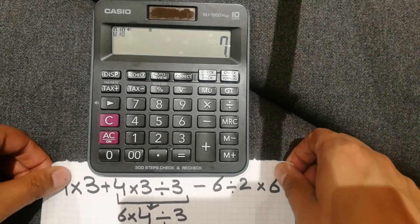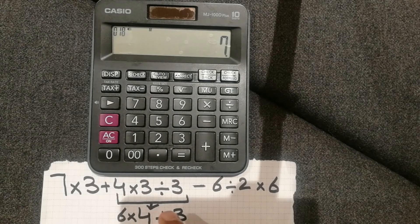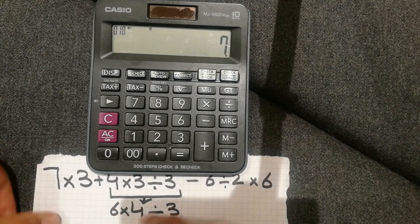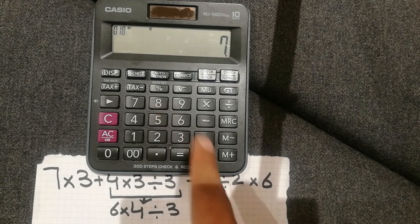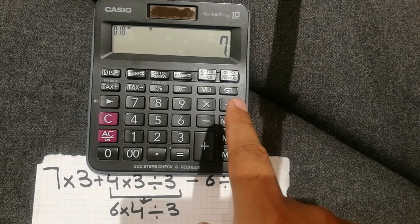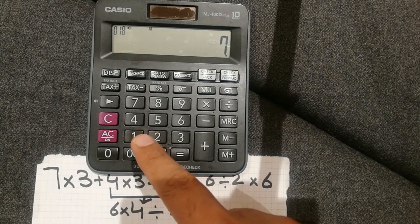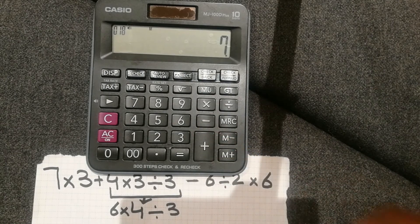The whole idea of this video is: if you are doing any MRC, M minus, and M plus calculation and you make a mistake — like I did 6 multiplied by 4 divided by 3 instead of the correct one — just press the answer showing on the screen, which was 8, and then press M minus to remove that equation. Then continue with the correct equation you want to do. I hope you understand, and if you have any questions, please put them in the comments.